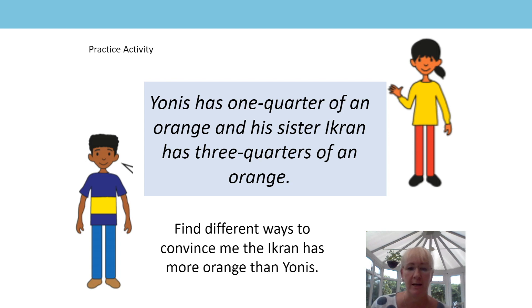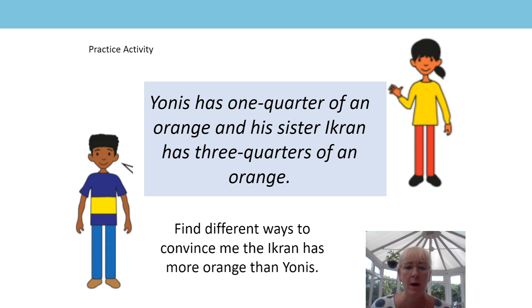It's almost time to finish — you've been amazing today. I'd like to give you one last task before our next lesson. Jonas has one quarter of an orange and his sister Ikran has three quarters of an orange. Show and convince me in as many ways as possible that Ikran has more orange than Jonas, and we'll look at how you got on next lesson. So be ready to convince me. That's the end of our lesson today — see you next time. Bye-bye.